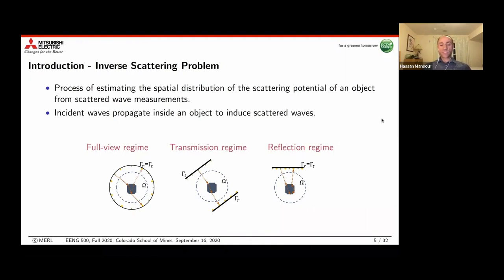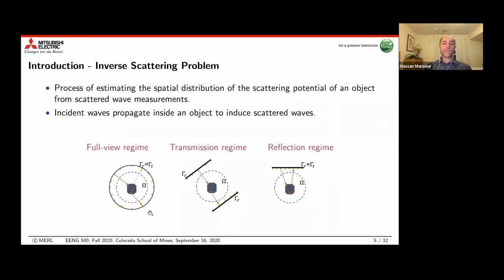There are three different regimes we can define for this type of problem. The first is the full view regime, where transmitters and receivers surround the object and we collect snapshots by moving the transmitter location all around the object. Transmitters are located in a circle around the object, and receivers are also located in that circle. We acquire measurements from all receivers and process that data to recover the relative permittivity of the object.